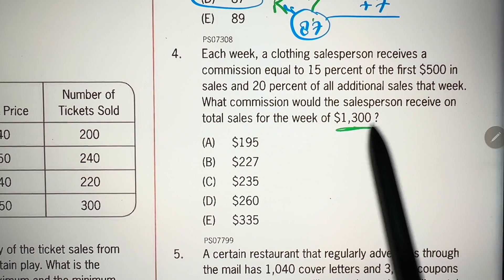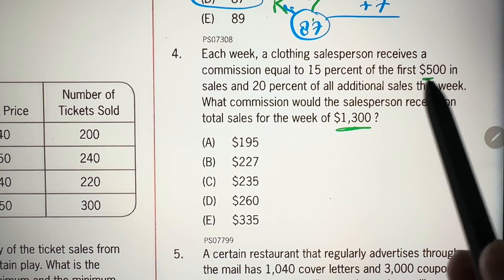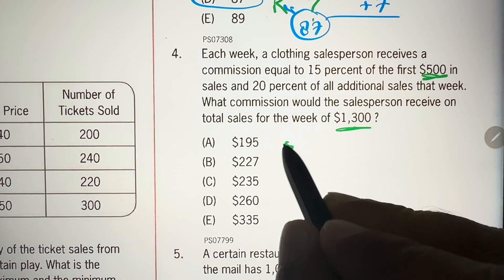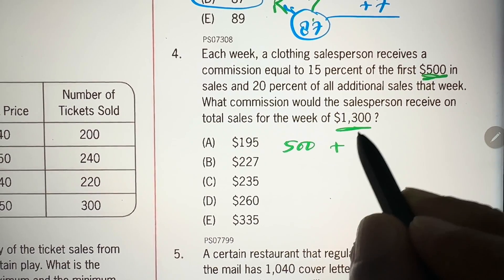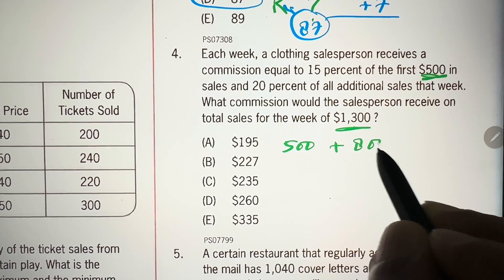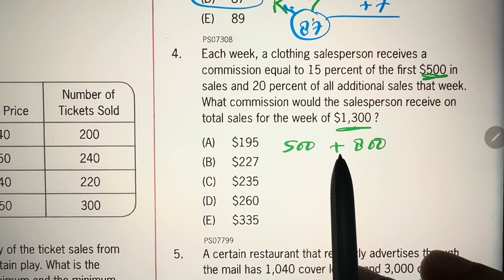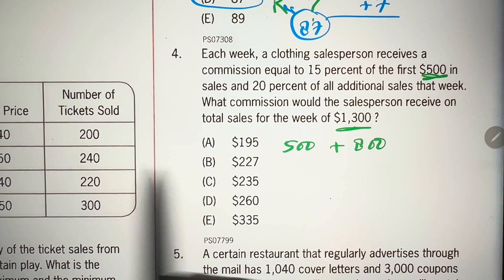Now, $1,300 is first $500 plus additional $800. So, total is $1,300. On this first $500,